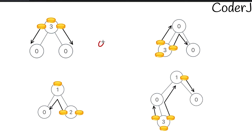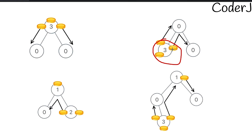If a leaf node has zero coins, it requires exactly one move to get one coin from its parent. What if it has more than one? Looking at the image example, if the leaf node has three coins, it has two additional coins, so it will take exactly two moves to reduce it to exactly one coin.